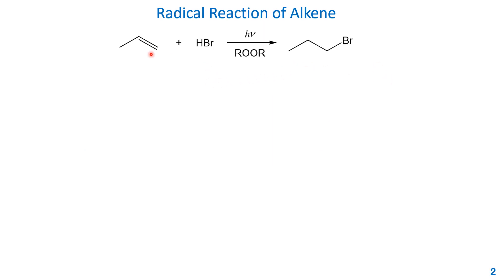Now let's talk about the reaction of an alkene with hydrogen bromide. Normally, this reaction — the hydrobromination of an alkene — gives you the Markovnikov product, meaning the vinylic carbon with more hydrogens takes the hydrogen and the other vinylic carbon takes the bromine, giving 2-bromopropane. However, if this is a radical reaction — for example with light and a peroxide — the product will be the anti-Markovnikov product: 1-bromopropane.